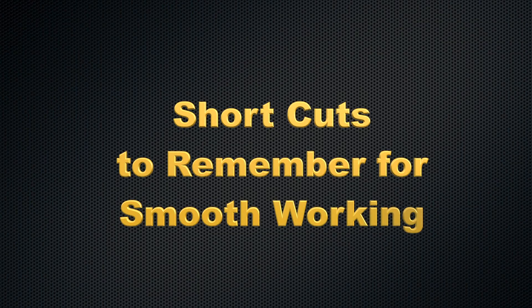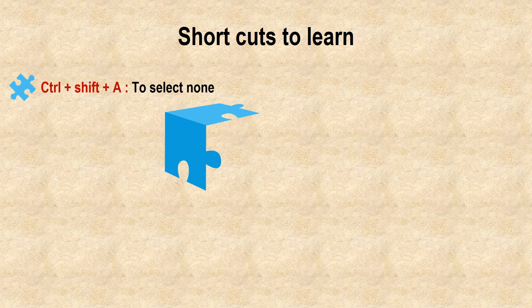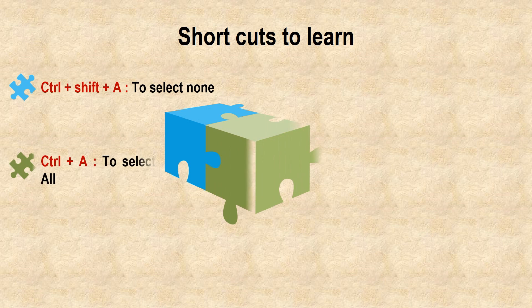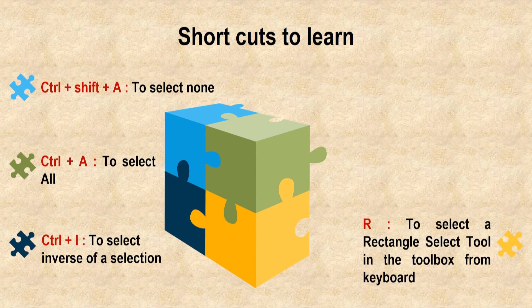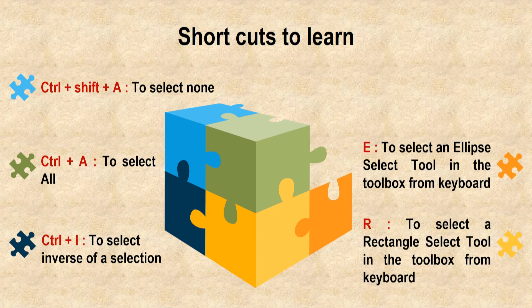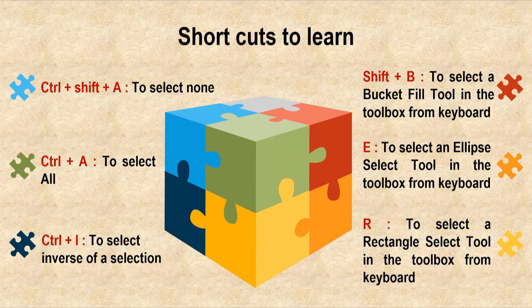For remembering certain shortcuts, it will make working quite smooth. Control+Shift+A can be used for selecting none, Control+A for selecting all, Control+I for selecting the inverse of a selection. Capital R is used to select the rectangle select tool, capital E for selecting the ellipse select tool directly, or the learner can directly click on the particular tool in the toolbox. Shift+B is the shortcut for the bucket fill tool. By making use of shortcut keys we can quickly pick up the various options.